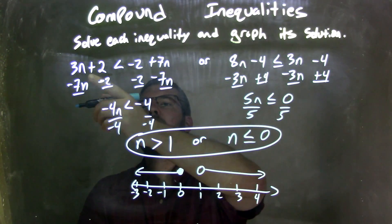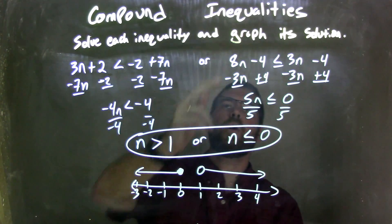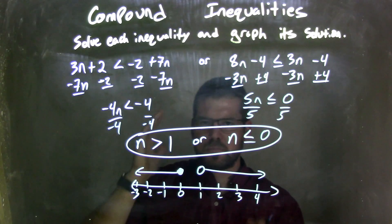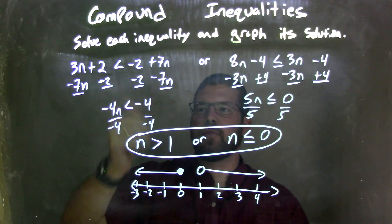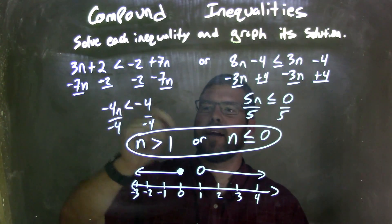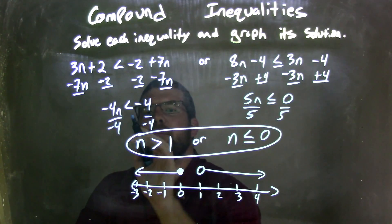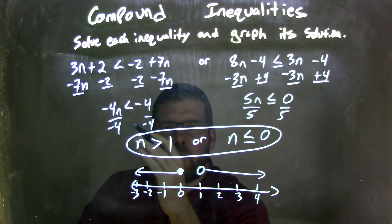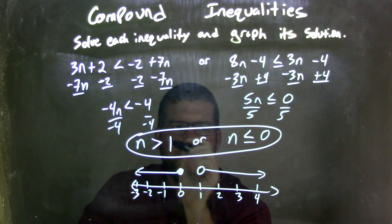Let's recap. We were given 3n plus 2 is less than negative 2 plus 7n, or 8n minus 4 is less than or equal to 3n minus 4. I solved each individually, bringing n to the left and numbers to the right, giving me negative 4n is less than negative 4. Dividing by negative 4 flips the inequality from less than to greater than, leaving n is greater than 1.